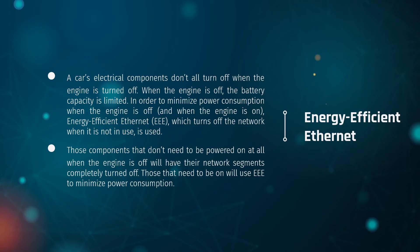Energy Efficient Ethernet addresses the fact that not all electrical components in a car turn off when the engine is turned off, causing a drain on the battery. To minimize this, Energy Efficient Ethernet turns off the network when it's not in use, so components that don't need to be powered on stay off until the engine turns on. This helps minimize power consumption.